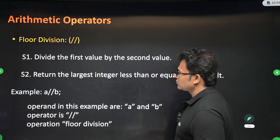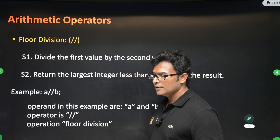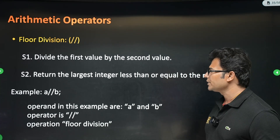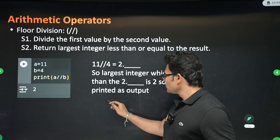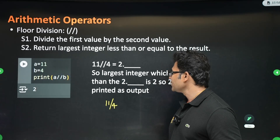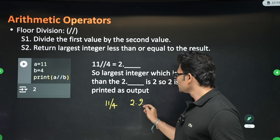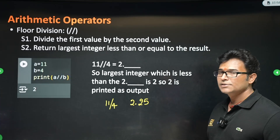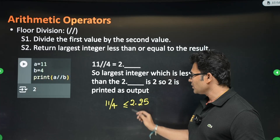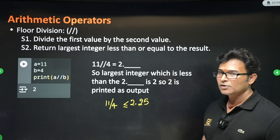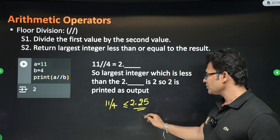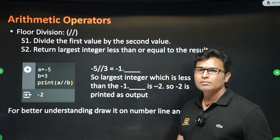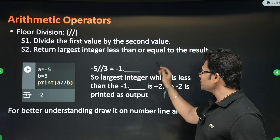Floor division is when you divide one number by another and take the largest integer less than or equal to the quotient. For example, 11 divided by 4 is 2.25, so the floor is 2. For minus 5 divided by 3, the quotient is minus 1 point something.